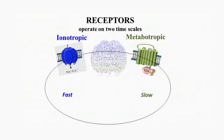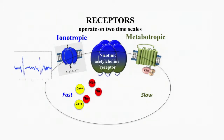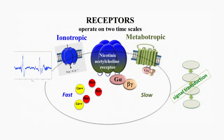Here, I will explore how the nicotinic acetylcholine receptor, which has been historically considered exclusively as an ion channel, may also operate as a metabotropic receptor, thereby activating signaling cascades once activated. I propose that the signaling property of the nicotinic receptor is directly mediated by its interaction with G protein.